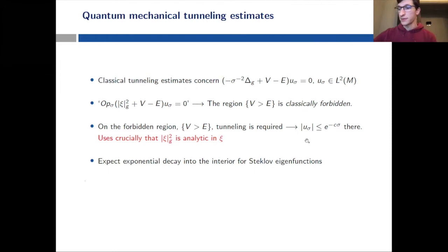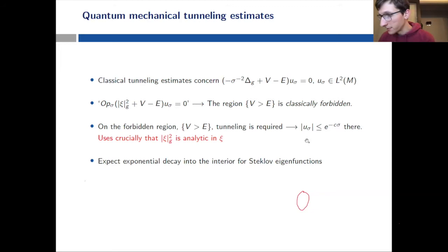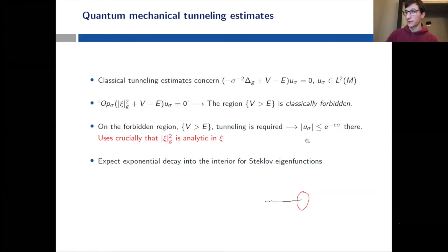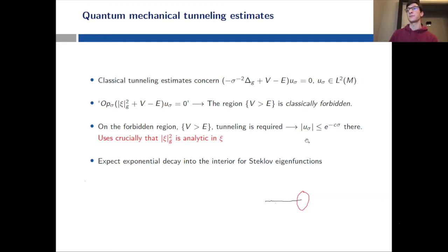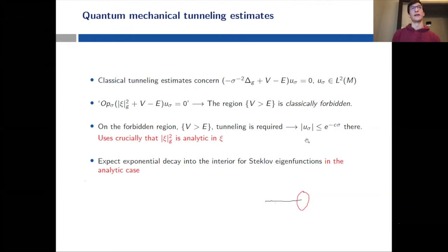Coming back to our picture: the Steklov eigenfunction lives on the red circle in momentum space, it needs to reach the black region corresponding to momentum one in the interior, and it must pass through the white region where everything is elliptic. We ought to expect behavior similar to quantum mechanical tunneling, because we're pushing through classically forbidden regions. At least in some analytic situation this should be true.